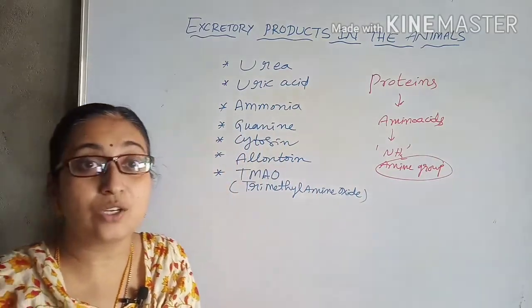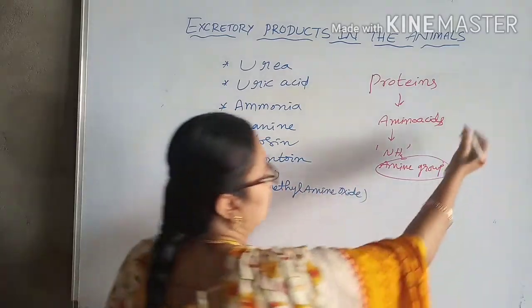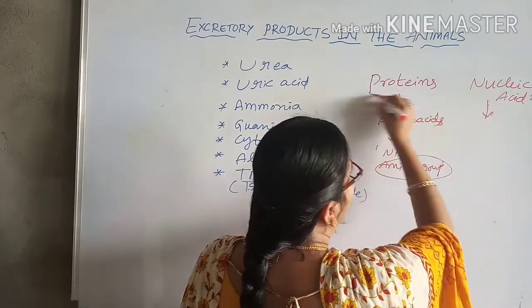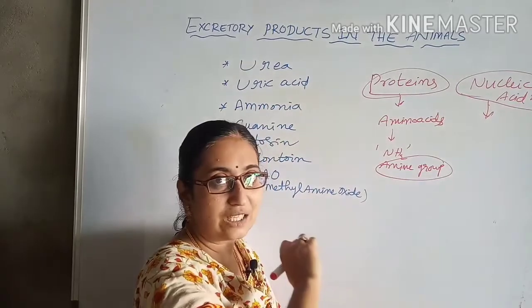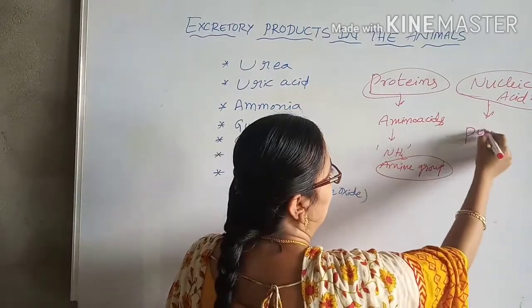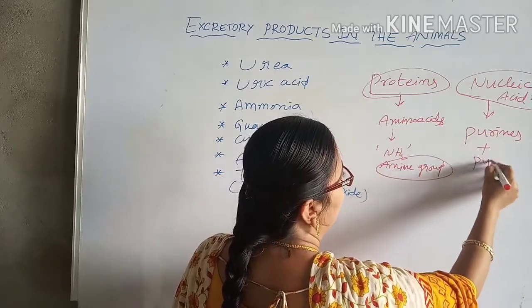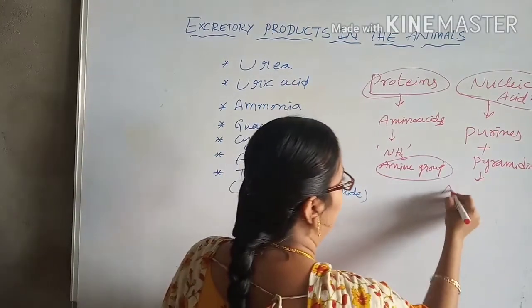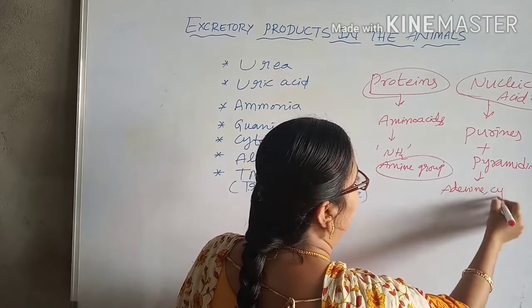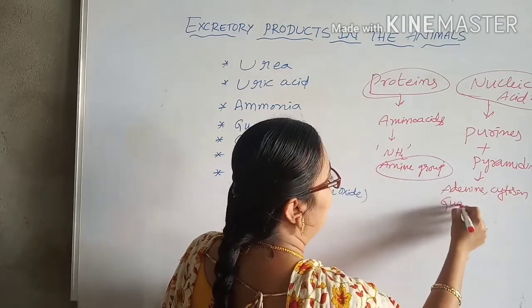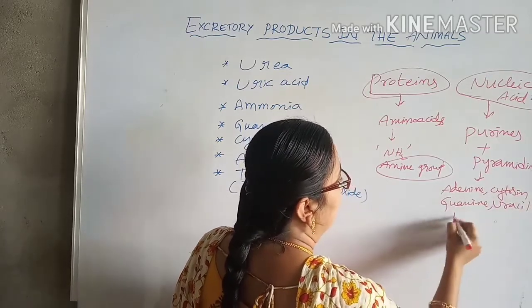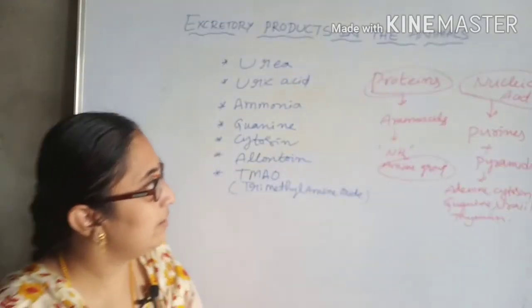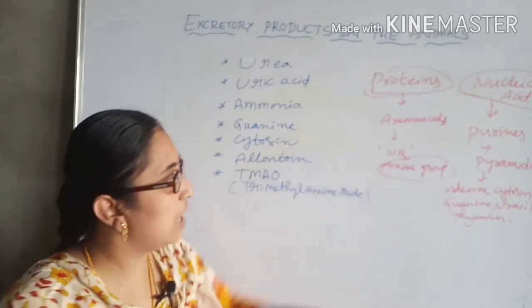In the same way, nucleic acid bases also contain nitrogen. The nucleic acid bases are purines and pyrimidines — adenine, cytosine, guanine, uracil, and thymine. These are the nitrogen compounds, and they also consist of the amine group.